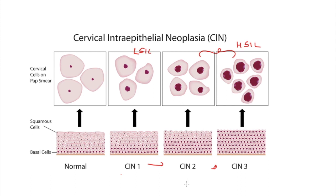Note: pap smear cannot report CIN 1, 2, or 3 directly, because CIN staging requires looking at the basement membrane and the extent of dysplasia - less than one-third, one-third to two-thirds, or more than two-thirds - with an intact basement membrane. For that you need a biopsy. From pap smear, all you can determine is ASCUS, LSIL, or HSIL.